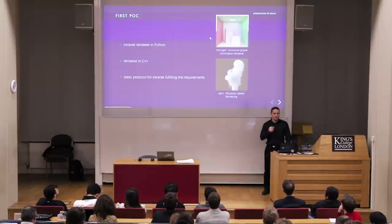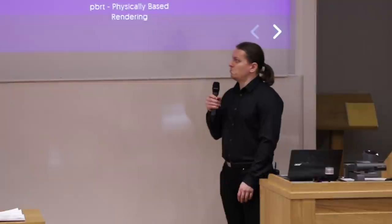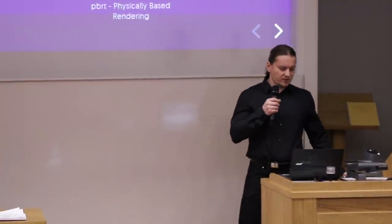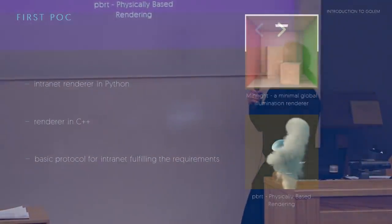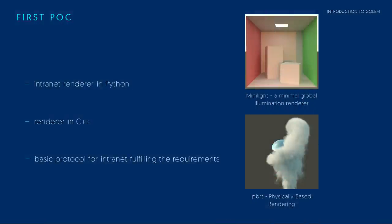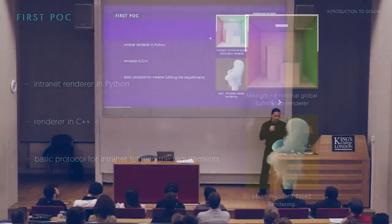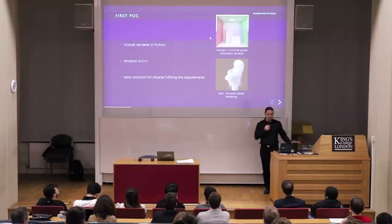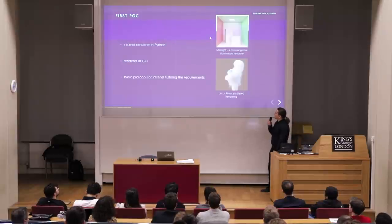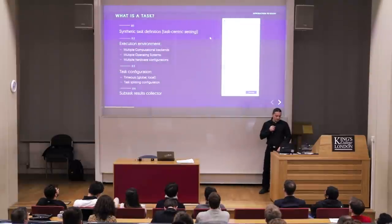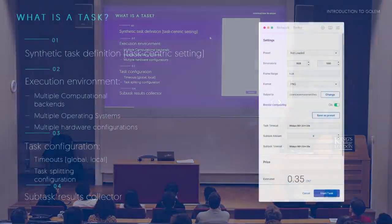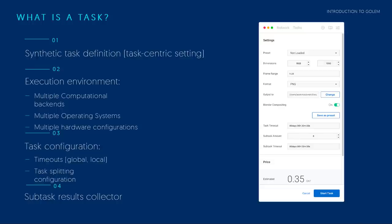Golem is a project we've been working on for almost four years. It started as a very simple use case for intranet rendering. The first use case took about two to three weeks to implement — it was a simple MiniLite Python renderer used in our company. It worked pretty well. We then moved on to a more advanced renderer, PPRT, an open source renderer. We implemented this as well and were pretty happy with it, but later started digging deeper into the problem.